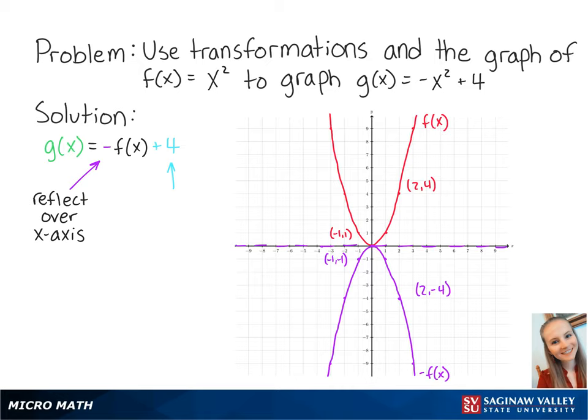Adding 4 to the function means that we will shift our new graph up by 4 units. So our new points are now at 2, 0, and negative 1, 3. Connecting the points, we get the graph of g of x, and this is the final answer.